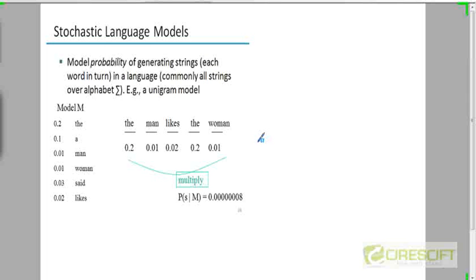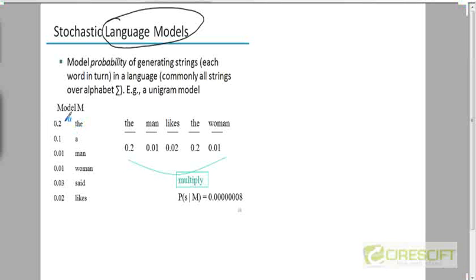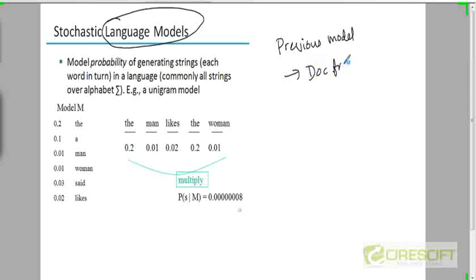The way to think about this is: imagine building a language model for each class. A language model for each class will be an estimate of the frequency or the proportion of words. In the previous version of Naive Bayes, we also built a language model — one where we looked at the proportion of documents which have a particular word. In the previous model, we were computing something analogous to the document frequency of a particular word.